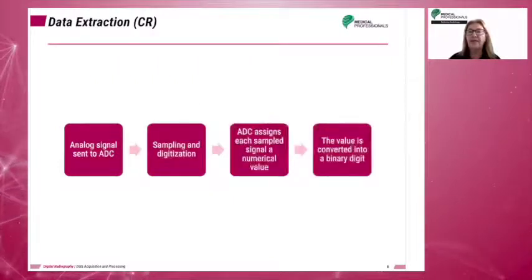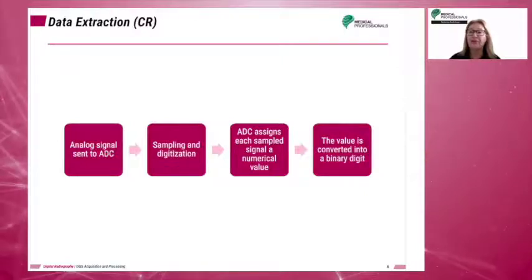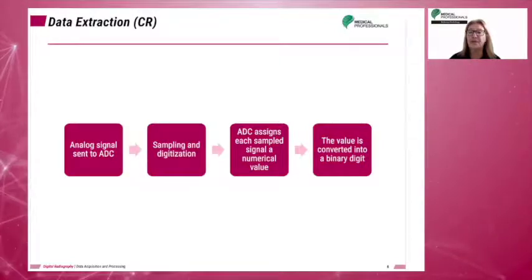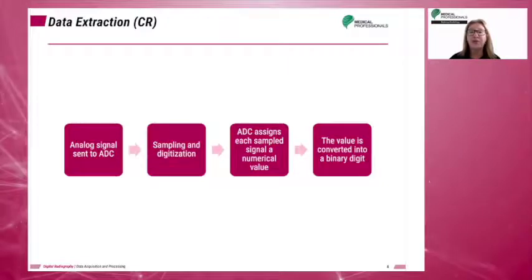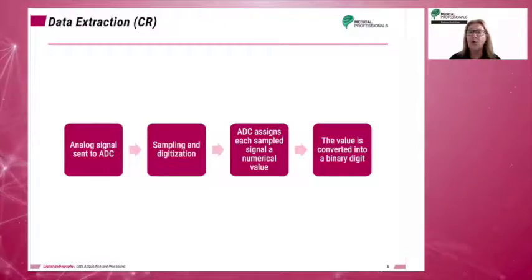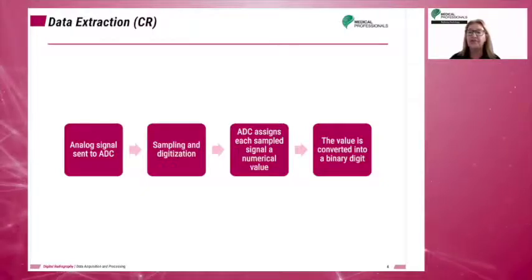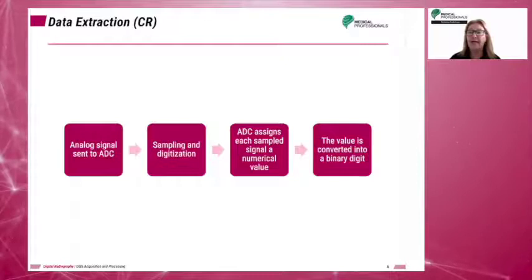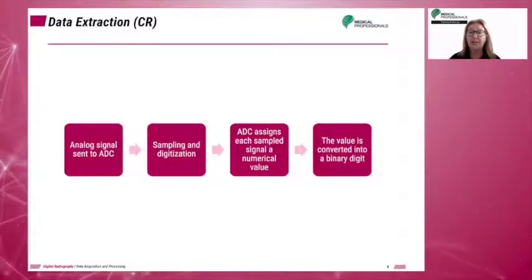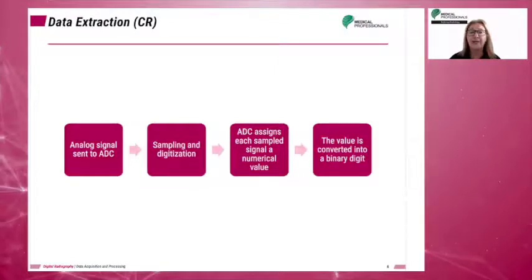The electrical signal is then sent to the analog-to-digital converter. The ADC performs two functions: it samples the signal, and converts the signal to discrete numerical values in a process called digitization or quantization. The electronic signal is sampled by the ADC at a specific predetermined rate or frequency.